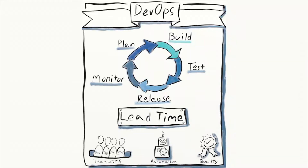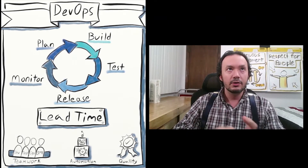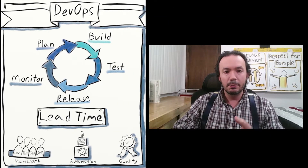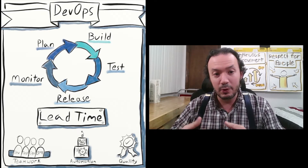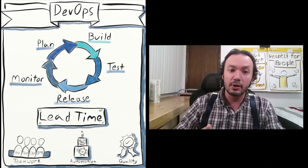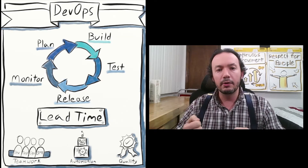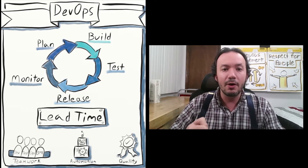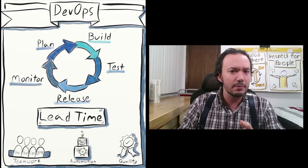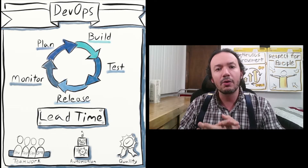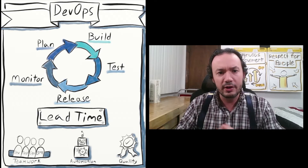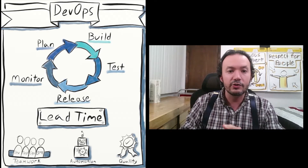If we look at the graphic here, we can see at the top what's referred to as the delivery pipeline or the feedback loop. On the right of the cycle, you can see build, test, and release. These are frequently referred to as the delivery pipeline — things that we want to make sure are very well structured and easy to automate, things that traditionally have taken people a lot of time and effort and have introduced risk into operating our systems.